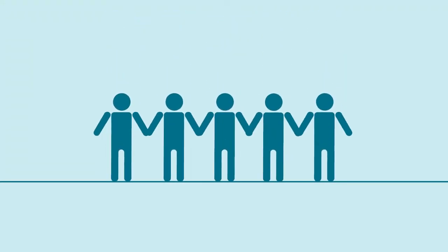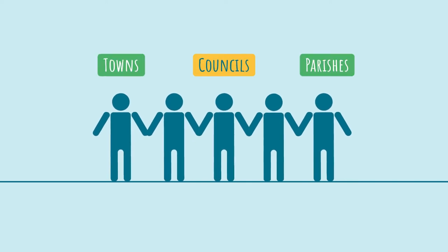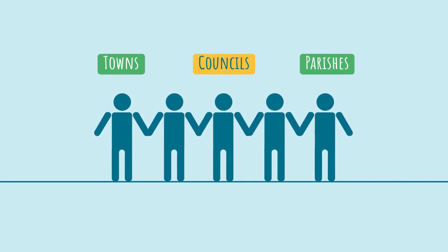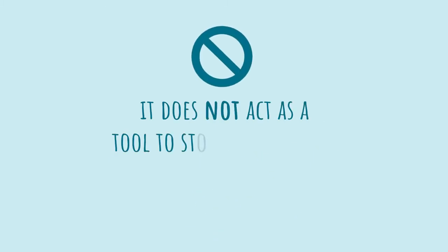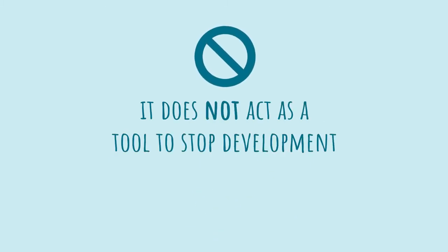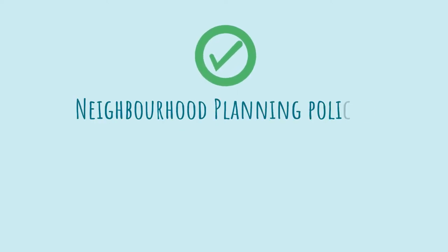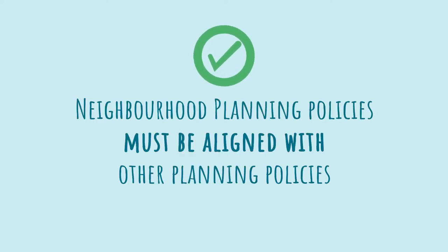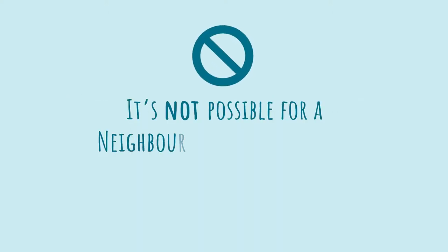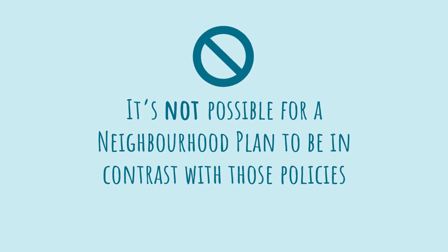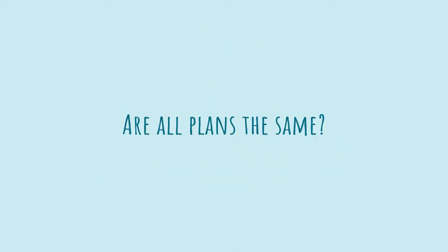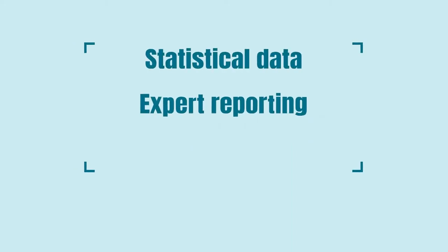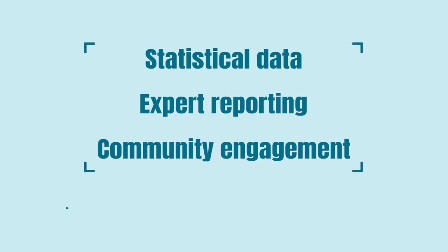Neighbourhood planning is about working collaboratively between the councils and towns and parishes, but like all legislation it has its limitations. It does not act as a tool to stop development — that's not in the spirit of the policy. All neighbourhood planning policies must be aligned with other planning policies, for example the local plan and planning policy frameworks. It's not possible for a neighbourhood plan to be in contrast with those policies. Because each plan is based on statistical data, expert reporting and community engagement, they can all be different, however the process remains the same for each one.